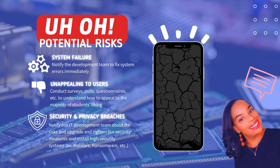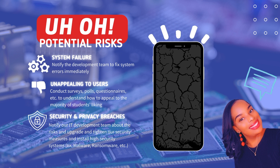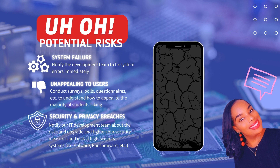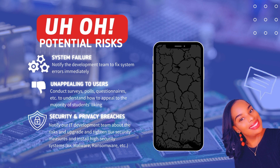It's time for the potential risks. We narrowed it down to the top three. The first one being system failure — app crashes, glitches, connection issues — and how we're going to resolve that is through risk transfer: we notify our development team to fix system errors immediately. What if our app is unappealing or useless to our target audience? We resolve that through risk mitigation — we conduct surveys, polls, and questionnaires to understand how to appeal to the majority of students. And third, what about app security and consumer privacy breaches? We resolve that through risk transfer, notifying our IT development team about the risk, and risk avoidance — we upgrade and tighten our security measures and install high security systems, for example against malware, ransomware, and so on.